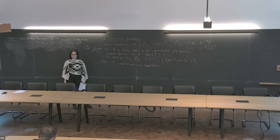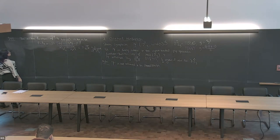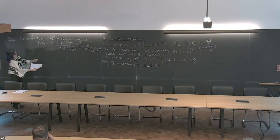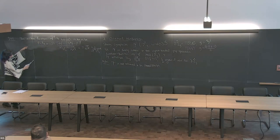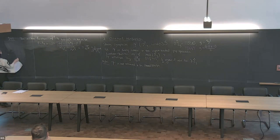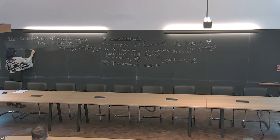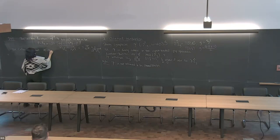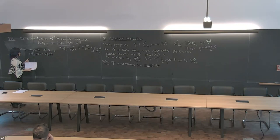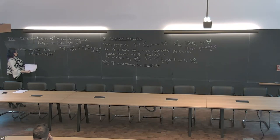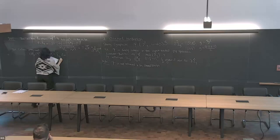Later on, the action function is just going to be the time it takes for the Reeb flow to come back in your open book decomposition. The action function is kind of measuring how much ψ distorts your curves. The Calabi invariant is an average of the action function.